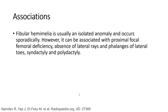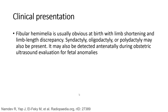Fibular hemimelia is usually an isolated anomaly and occurs sporadically. However, it can be associated with proximal focal femoral deficiency, absence of lateral ray and phalanges of the lateral toes, syndactyly, and polydactyly. It is usually obvious at birth with limb shortening and limb length discrepancy; oligodactyly or polydactyly may also be present. It may also be detected antenatally during obstetric ultrasound evaluation or fetal anomaly scan.